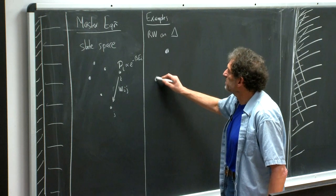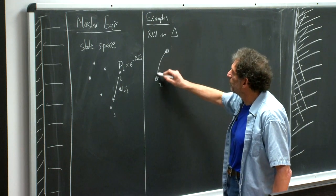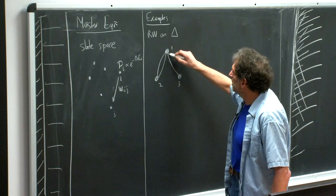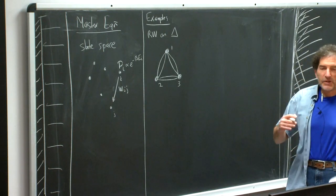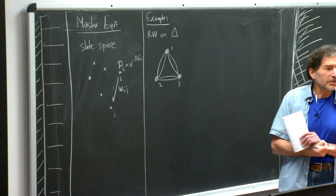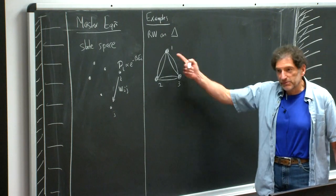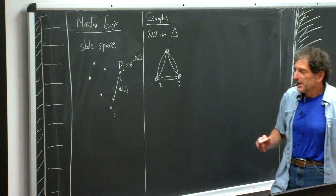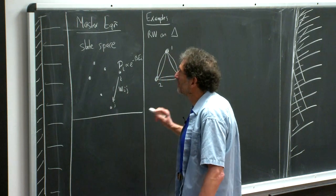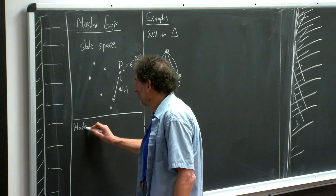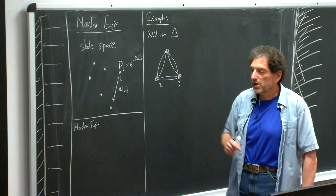The first example is a random walk on a triangle. Imagine you have your state space — an extremely simple state space — three points: one, two, three. The transition rates between all pairs are all the same. Because the overall transition rate doesn't play any role, let's just take the transition rates equal to one. And what I want to do is compute the evolution of the probability distribution on this triangle.